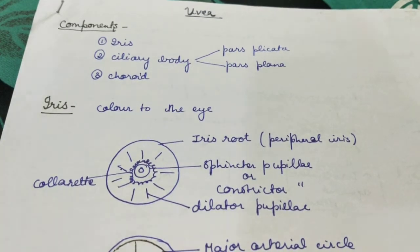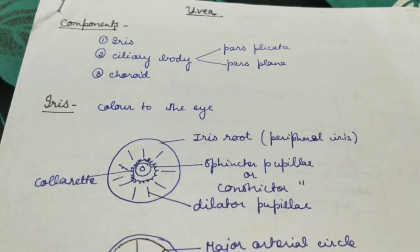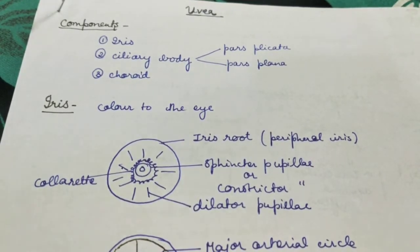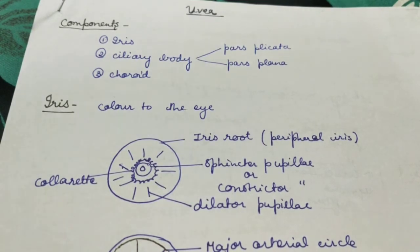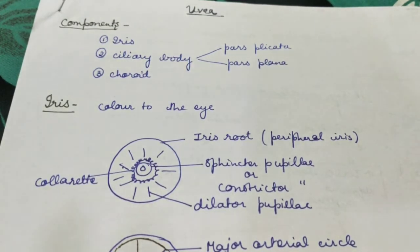The ciliary body has two parts: pars plicata and pars plana. Now we start with the first structure, that is the iris. The iris gives color to the eye and has a peculiar pattern or peculiar shape.